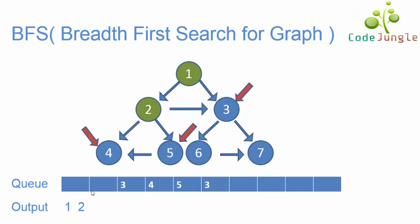Now the next element in the queue is 3. We will see what all are the neighbor elements for 3. The neighbor elements for 3 are 6 and 7, so 6 and 7 are pushed into the queue and 3 has been moved to the output.